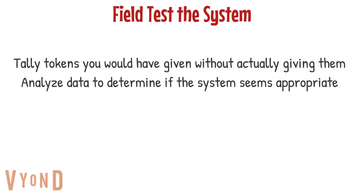You want to field test the token system. In conducting a field test before you actually start the system, you would tally the tokens you might have given the learner without actually giving them — observe and make note of how many tokens they probably would have earned in a given timeframe. From there, you can determine what the exchange ratio will be and make adjustments. For example, if in 20 minutes they can earn 10 tokens, you'd keep in mind the max and minimum they can earn over the day and adjust your exchange ratios accordingly.